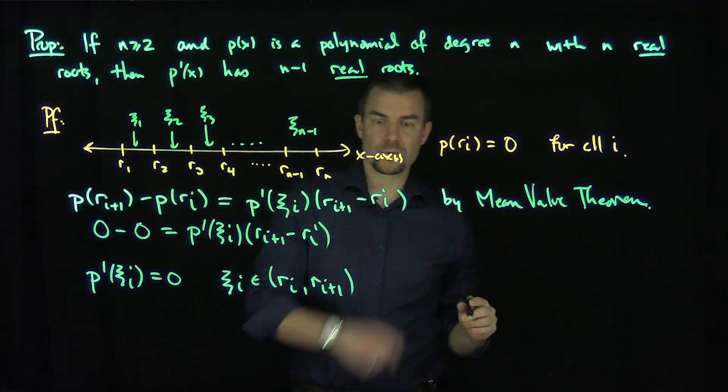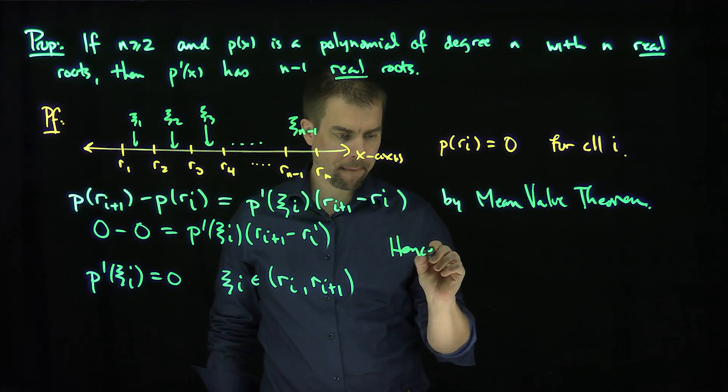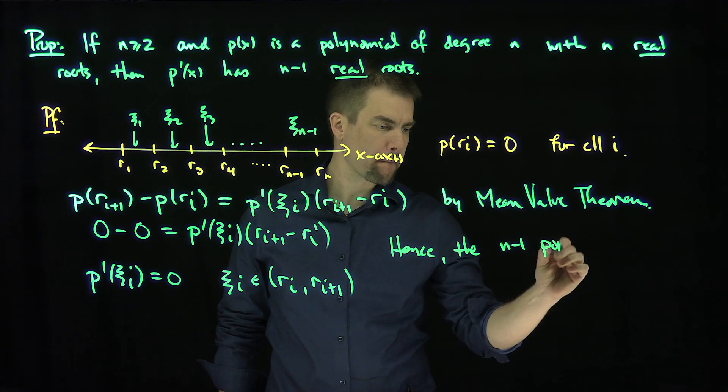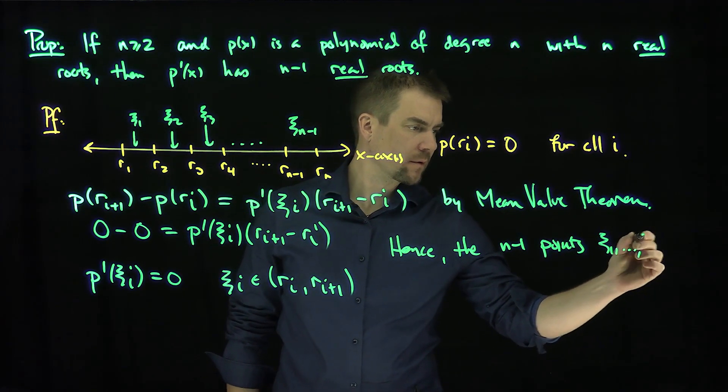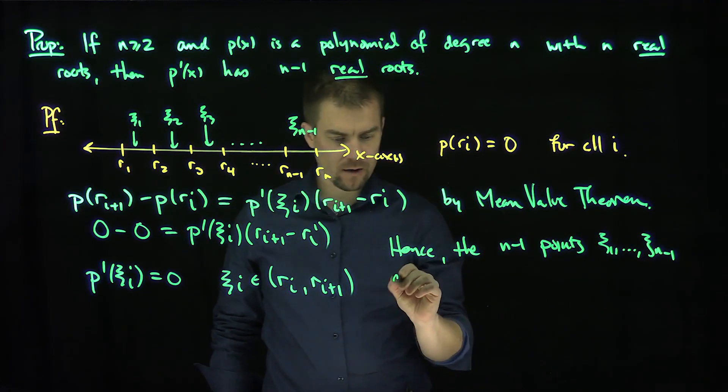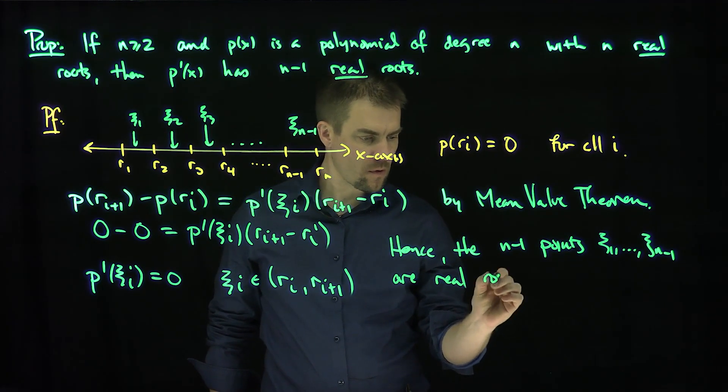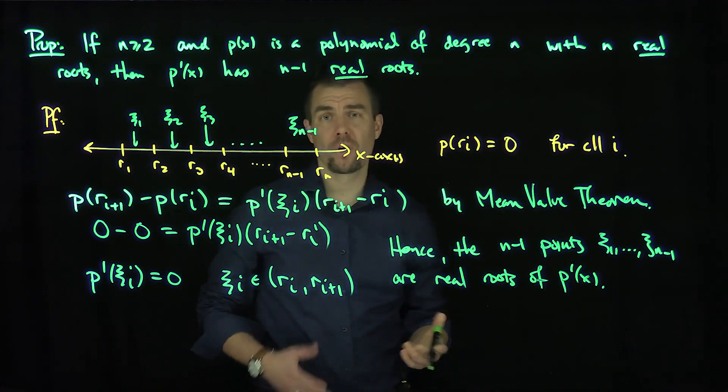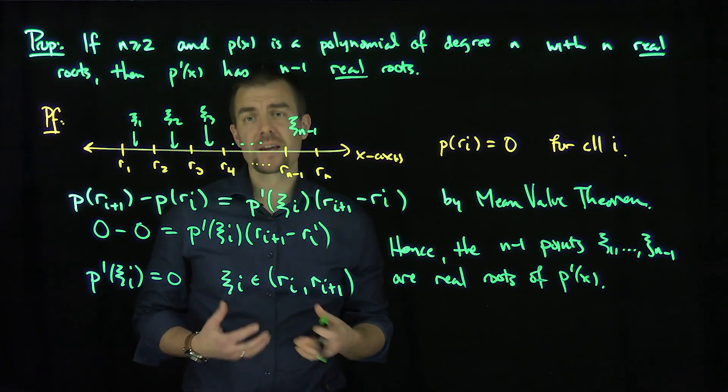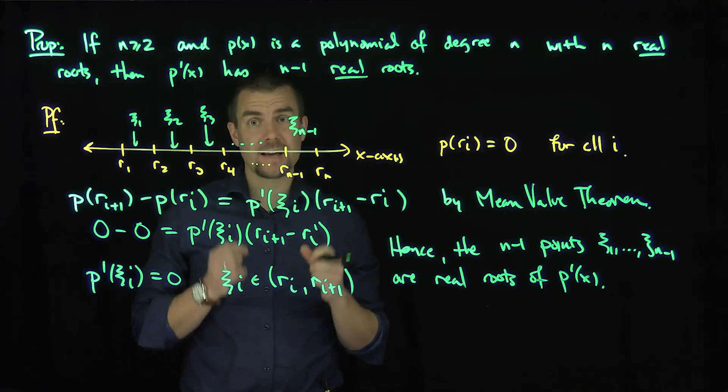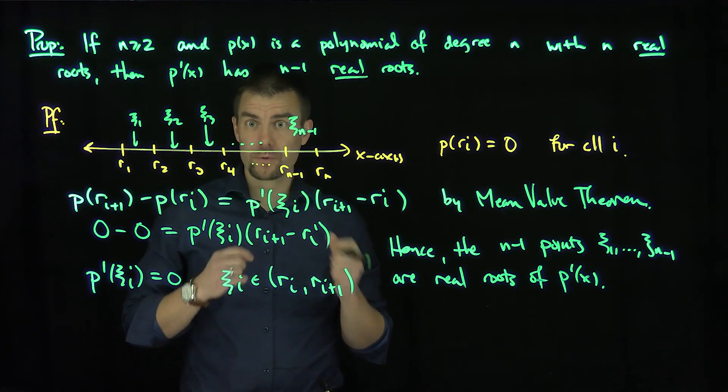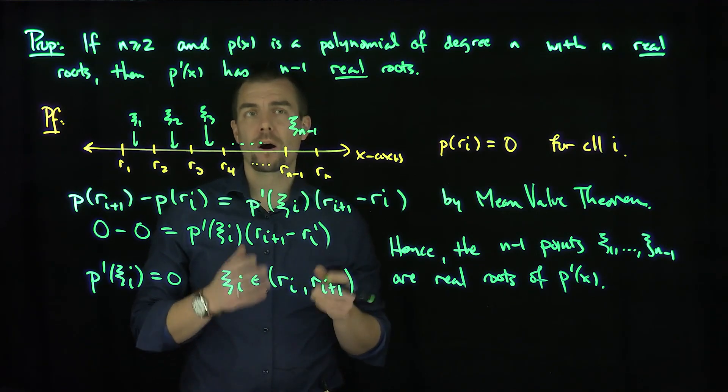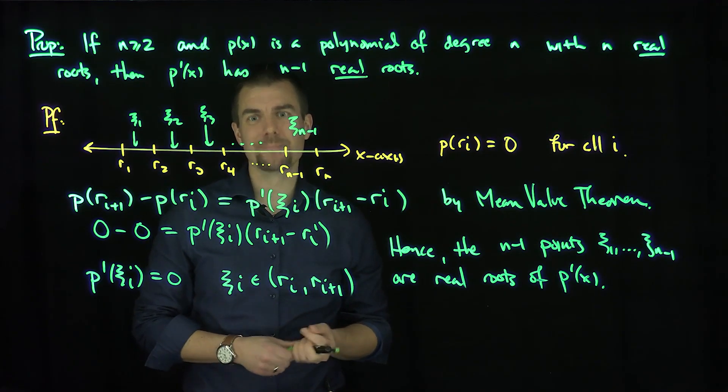So we have n minus 1 points. Hence, the n minus 1 points x1 through x(n-1) are real roots of p'(x). Now a polynomial of degree n minus 1, like p' is, has exactly n minus 1 roots up to multiplicity, and we found all of them, and all of them are real. Therefore, the roots of p' are all real, and there are exactly n minus 1 of them. Thank you very much.